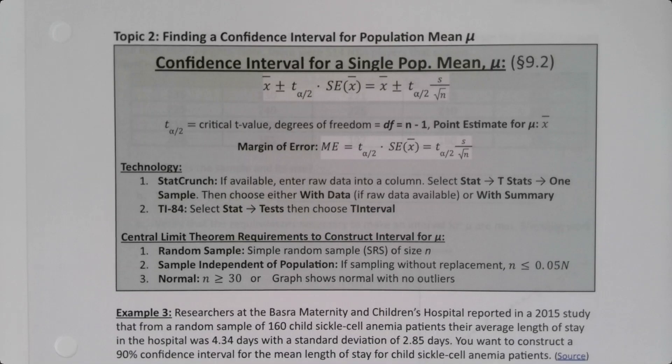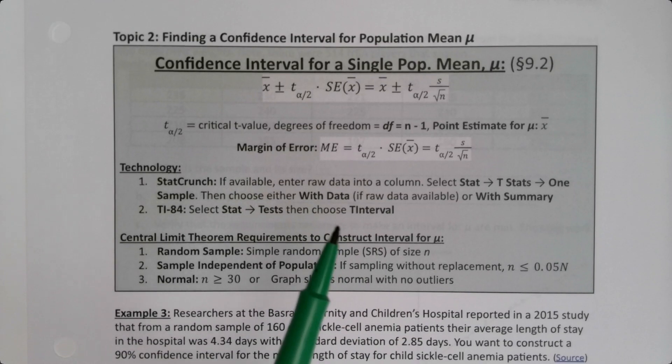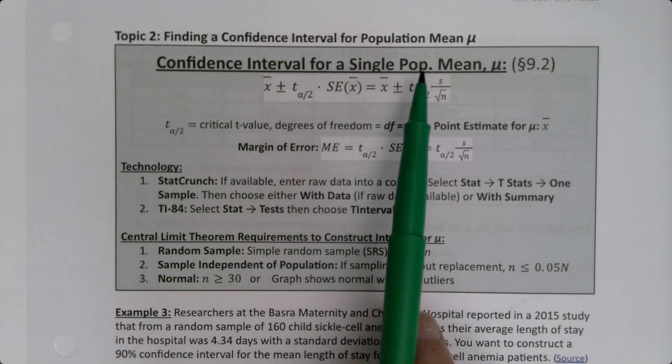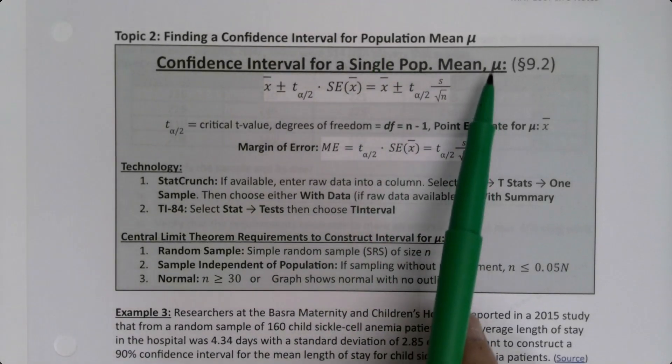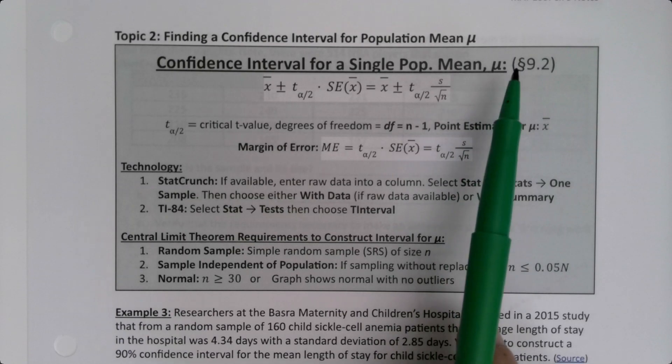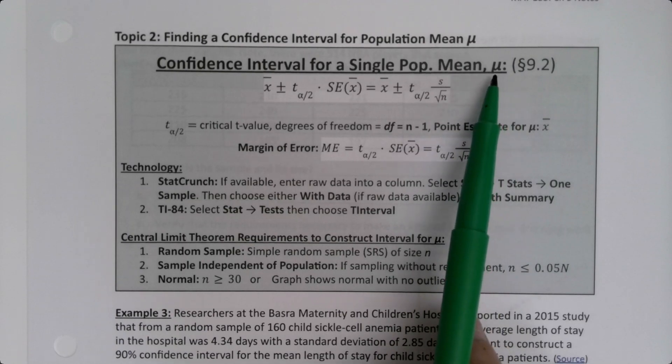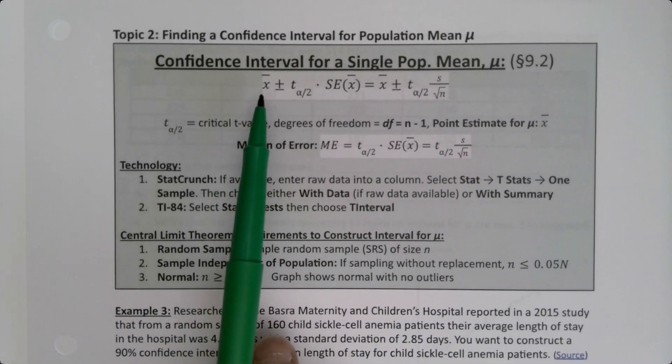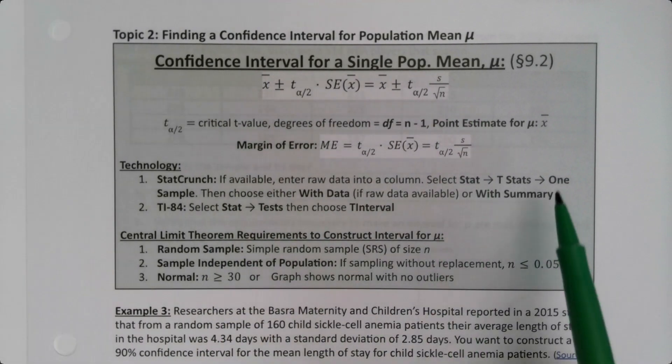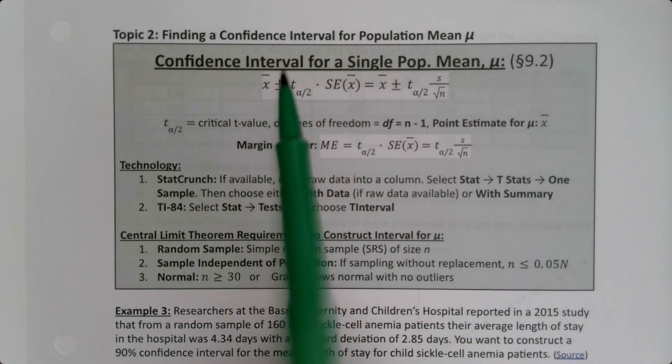Now that we know how to find the critical t values, we're ready to find the confidence interval for a single population mean, mu. Mu is the population mean, which we don't know what it is, but we're going to make a guess for what it is based on x-bar, the sample mean. Speaking of which, that sample mean is our point estimate, it's our single best guess.